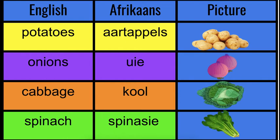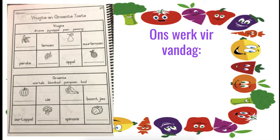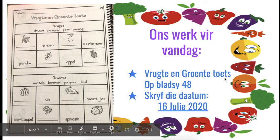And now if you feel you need to listen to it again, please go back in the video and listen to it over and over as much as you need to. Because your work for today is die vruchte en groente toets. Die toets is op bladsy agt en veertig in jou groen Afrikaans boek — on page 48 in your green Afrikaans book. Skryf die datum bo: 16 Julie 2020 — so you're going to write the date on top: 16 July 2020.